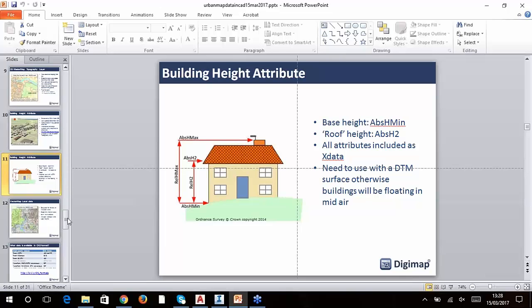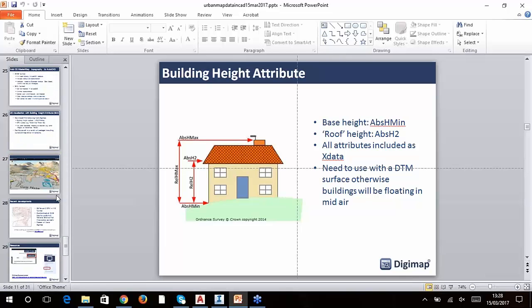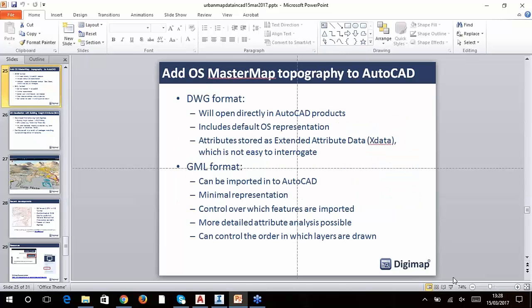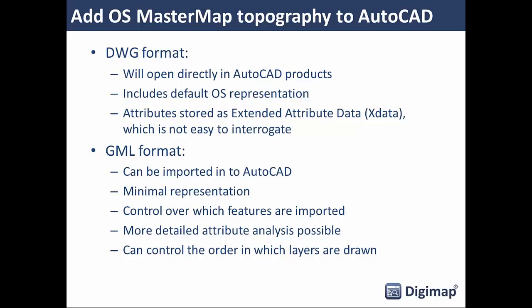In terms of loading MasterMap into AutoCAD, I showed the DWG version where attributes are stored as X data. If you need to interrogate that data more thoroughly, you can load GML format MasterMap into AutoCAD Map 3D — there is a template downloadable from the Autodesk website. That way you have more control over which features are imported and can do more analysis on the attributes. We have a help page on our system that explains this process in more detail, as it's slightly more involved than just dropping in the DWG.